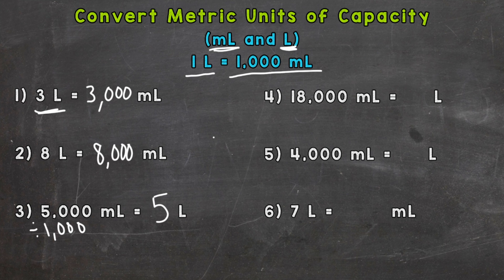Number four: we have eighteen thousand milliliters that we need to split into groups of a thousand. Each one of those groups of a thousand is a liter, so eighteen thousand divided by a thousand gives us eighteen liters. Number five: four thousand milliliters — again splitting into groups of a thousand, each of those thousands is a liter — so four liters.